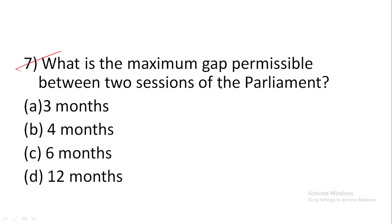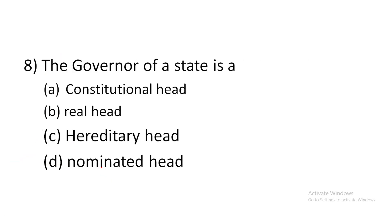Question 6: The Public Undertaking Committee is — answer is B, a parliamentary committee. Question 7: What is the maximum gap permissible between two sessions of the Parliament? Answer is C, six months.